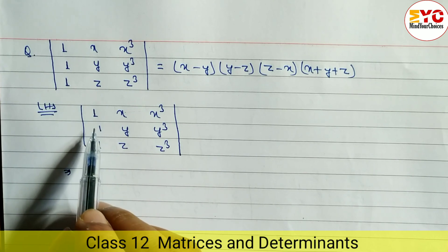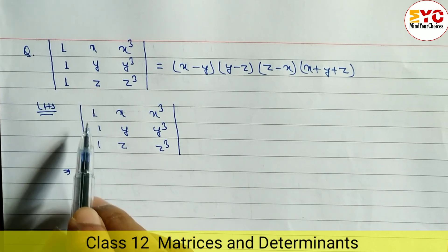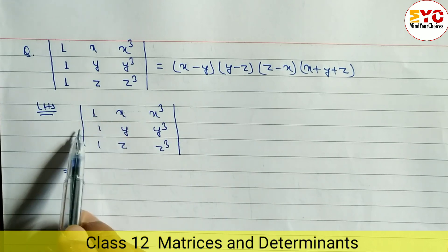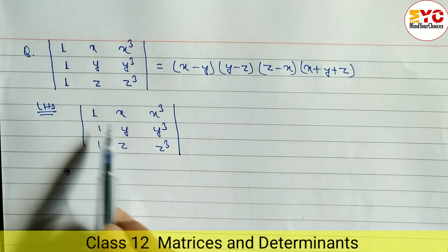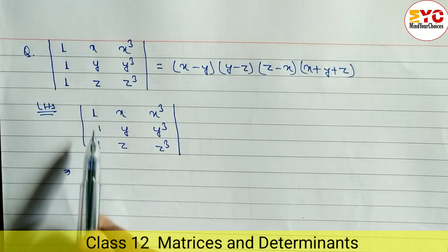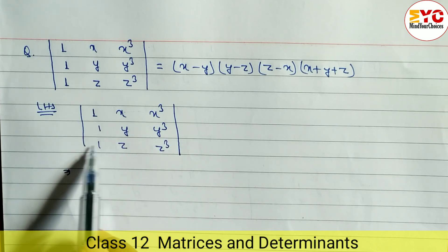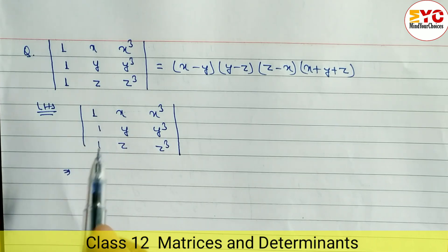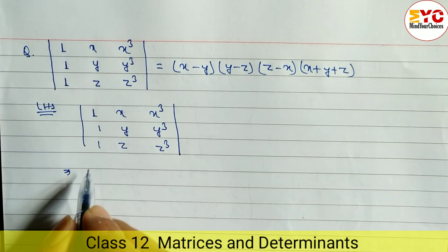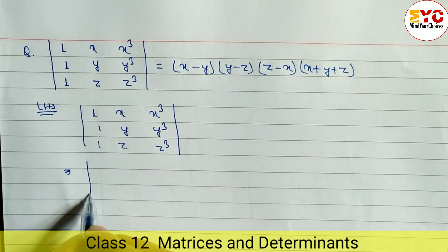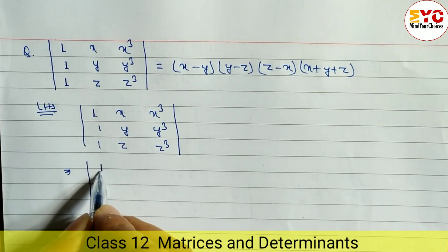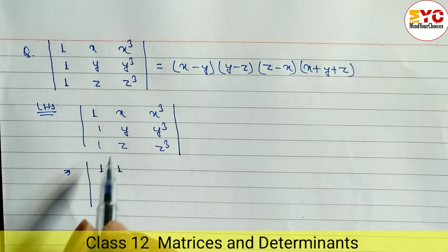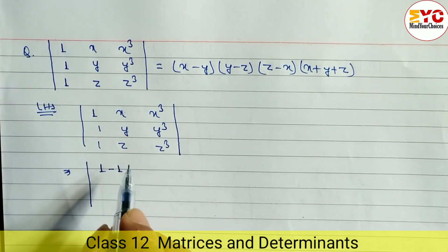What we have to do is make any two elements either from rows or from columns zero. When you subtract the first row and second row, you can see here one minus one gives zero. Again, subtracting the second row and third row, we get zero as well as x minus y and y minus z.